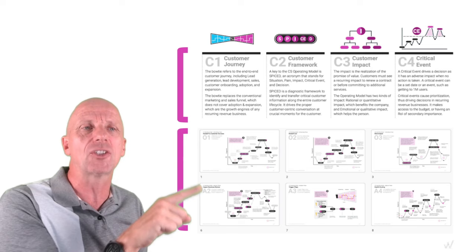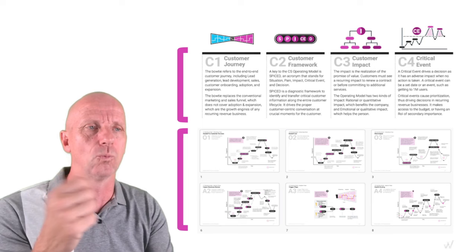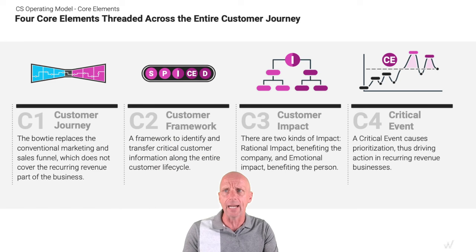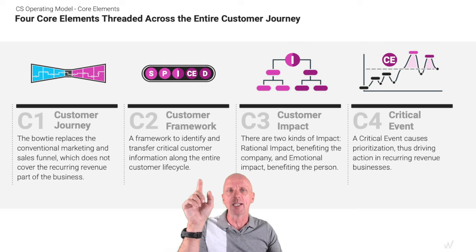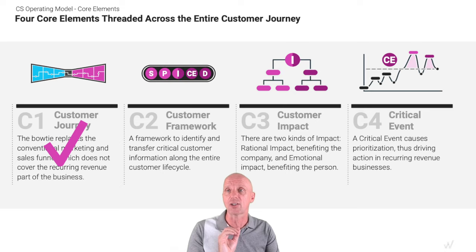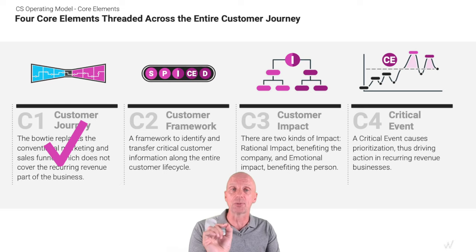Let me give you the key elements — I'm going to separate them into the core elements and the blueprints. I'm going to focus today on these core elements and demonstrate a few of them. I've got four core elements, which I'll name C1 through C4. As an overview: C1 is the customer journey — the entire thing we just did with the popsicle moments. C2 is SPICED. C3 is impact. And C4 we're going to wrap up with critical events. The customer journey is done — I know what my popsicle moments are.